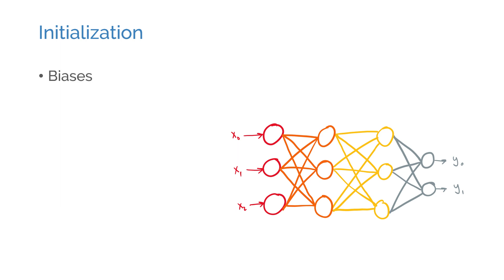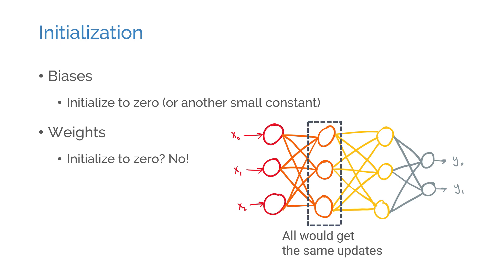Initializing the biases is usually easier. It's usually safe to initialize them to 0 or a small number. However, initializing the rest of the parameters to 0 or another constant is not a good idea. If we initialize all parameters to the same value, then they will all get the same updates during training, and end up learning the same features.